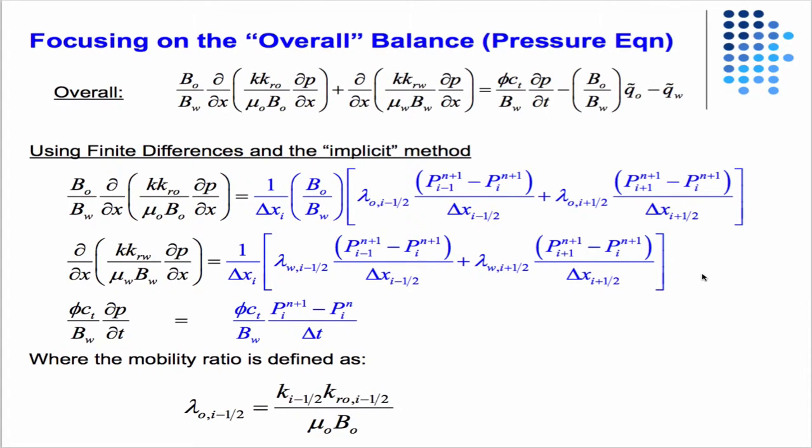Then we just plug in our difference rules. We're going to plug in central difference in space, forward difference in time. In the pressure equation, we're going to evaluate it implicitly at the n+1 time step for the spatial derivatives. So you see all the pressures are at n+1 in them.